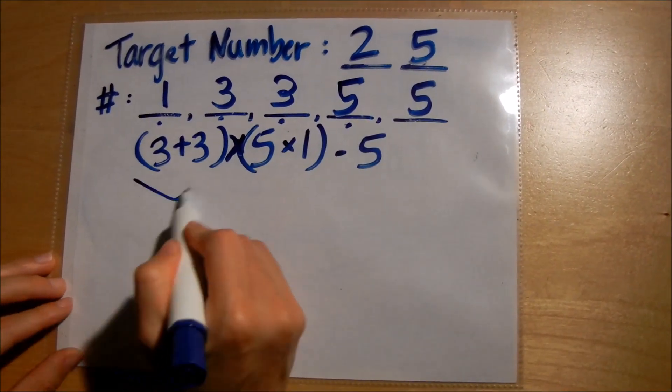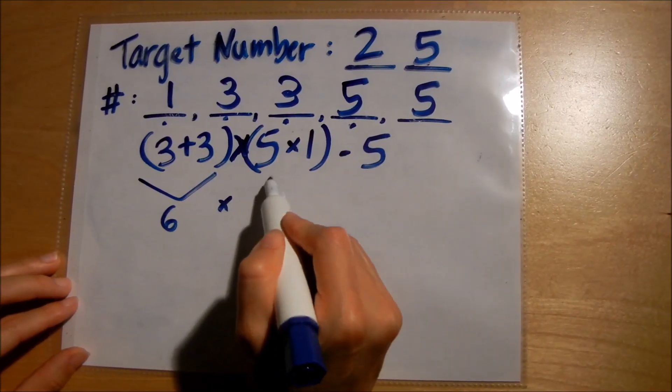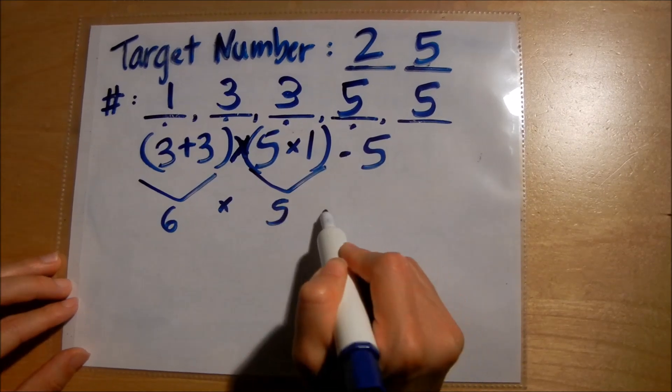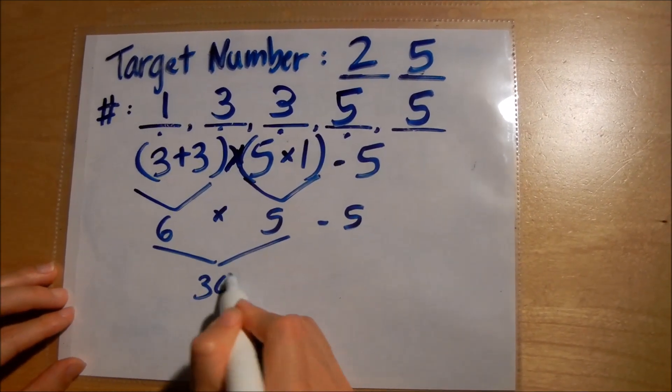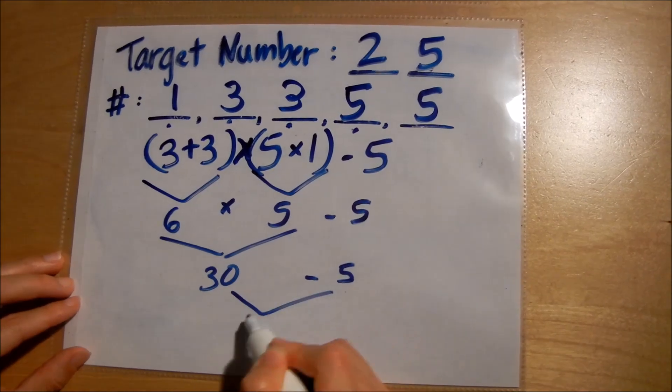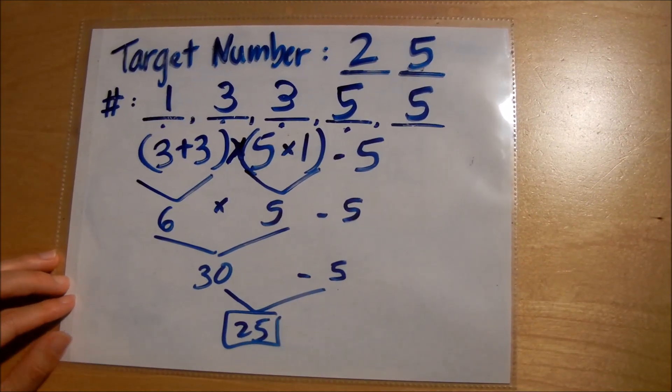Here's my problem. Three plus three is six times five times one minus five. This is thirty minus five and I get twenty-five this way.